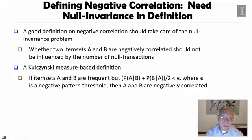Now, we give you another interesting definition, which is a Kulzinski measure-based definition. That means if we want to say A and B whether they are negatively correlated, what we need to see is A and B are frequent, but the condition: the probability of A under condition of B and the probability of B under condition of A, their average should be less than epsilon, where epsilon is a small negative pattern support threshold.